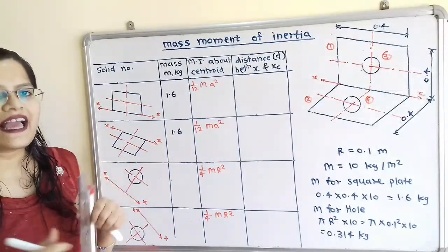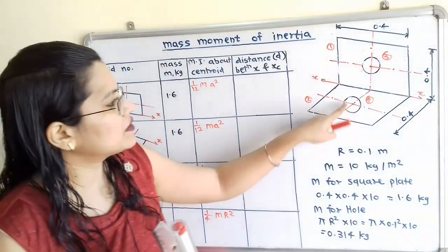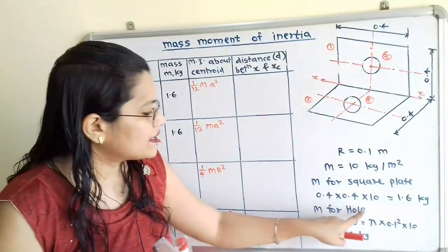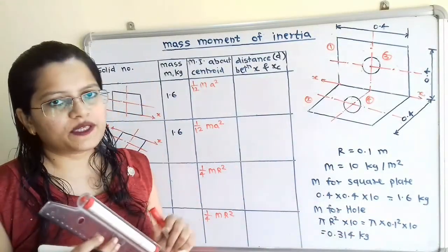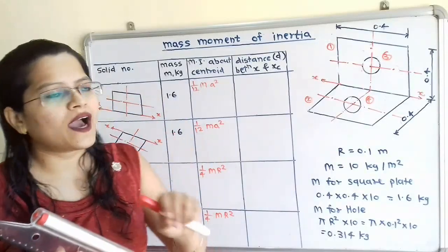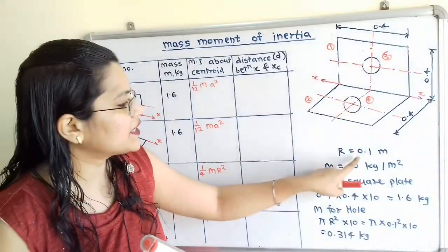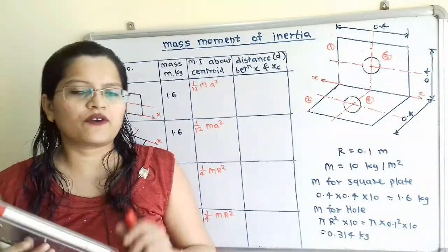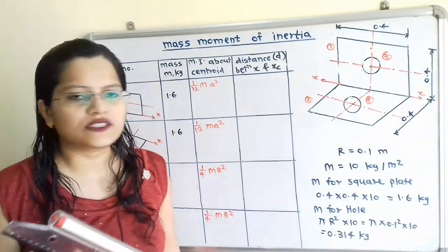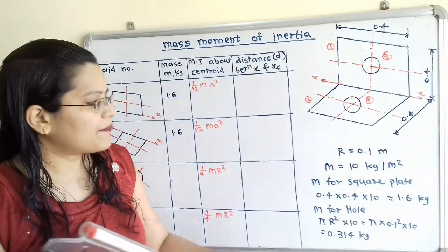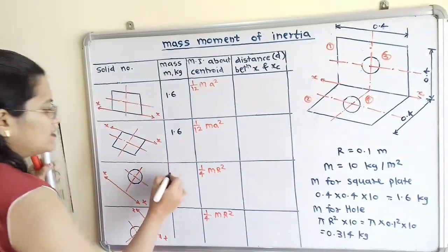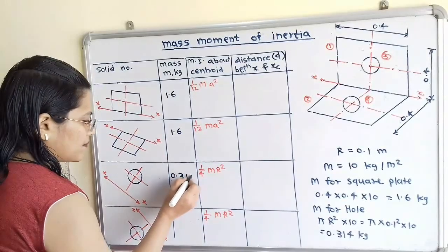Now we will calculate the mass of these holes. The hole area equals π × R², where the radius is given as 0.1 meter for each hole. So π × (0.1)² × 10 = 0.314 kg.